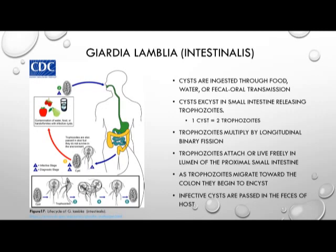The life cycle of Giardia lamblia begins with the cyst ingested through food, water, or fecal-oral contamination. That cyst then exits in the small intestine, releasing trophozoites — one cyst equals 2 trophozoites when it exits. Those trophozoites multiply by longitudinal binary fission, then attach themselves or live freely in the lumen of the proximal small intestine. As the trophozoites migrate toward the colon, they begin to encyst again, and this infective cyst stage is then passed in the feces of the host.